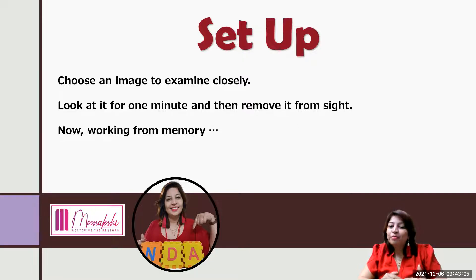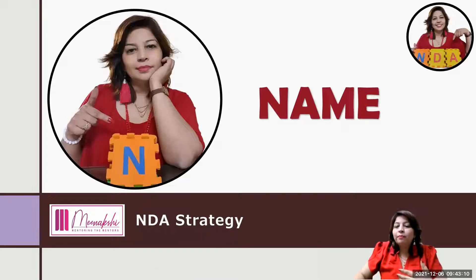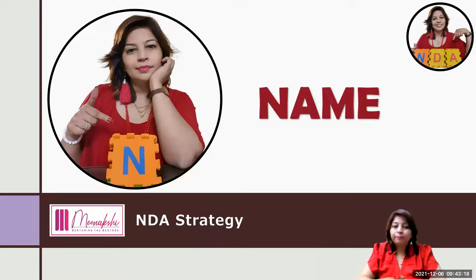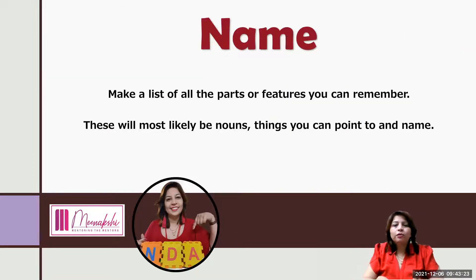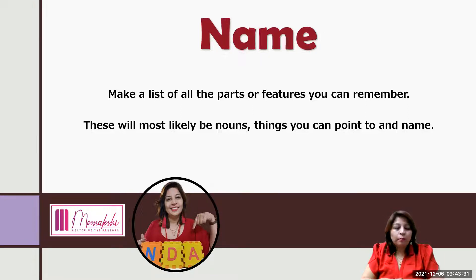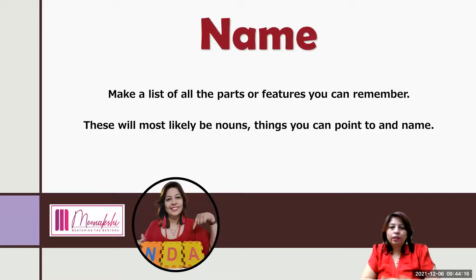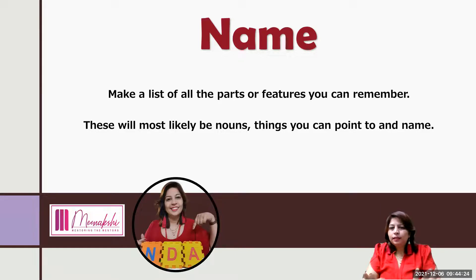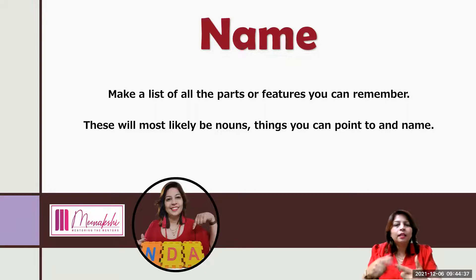Now, working from memory: after removing the image, give students time to recall. The first step — N for Name — asks them to make a list of all the parts or features they can remember. These will most probably be nouns. They jot down whatever nouns they can recall. For example, in a picture they visualized on screen they would write nouns like the ones they noticed. This will be discussed further with a detailed example.